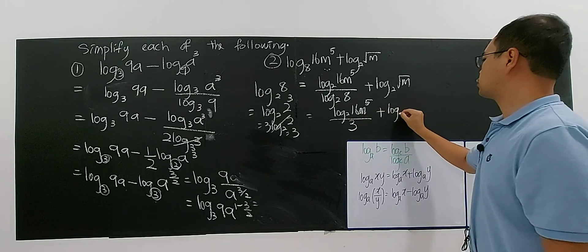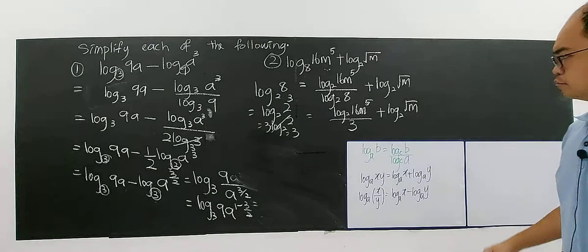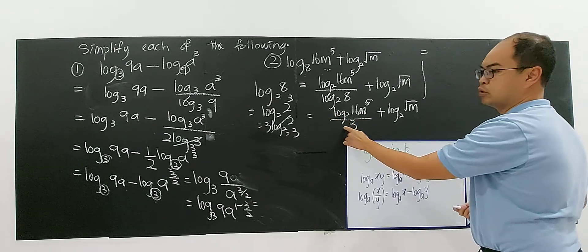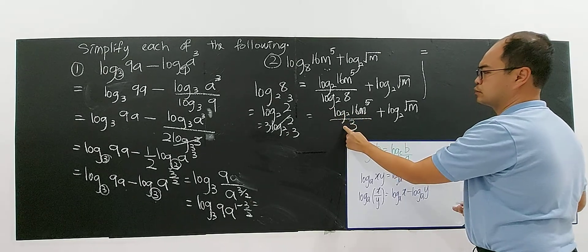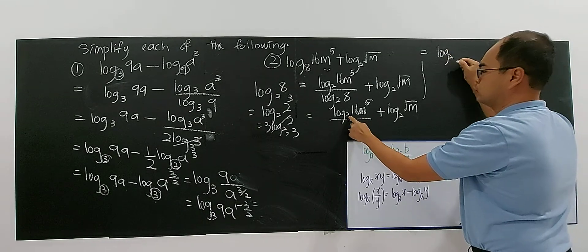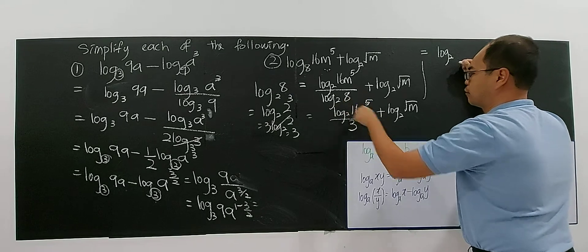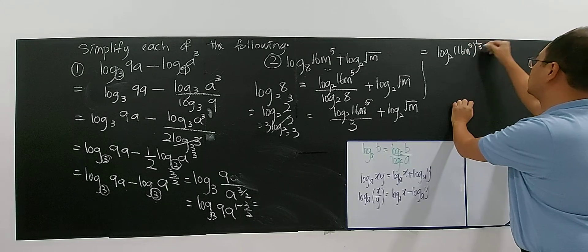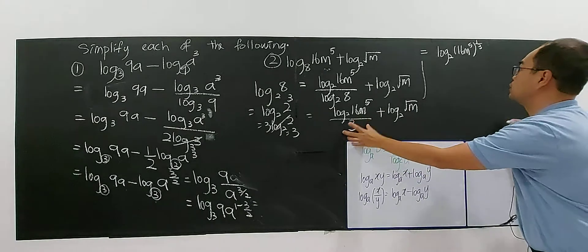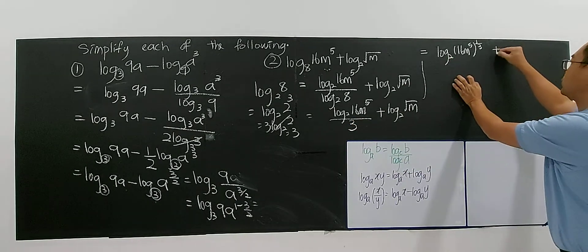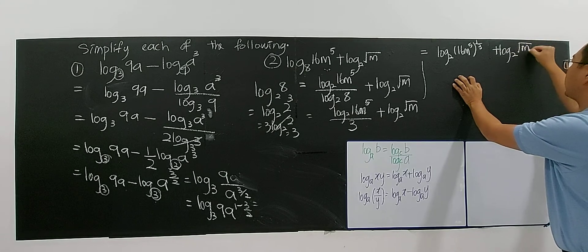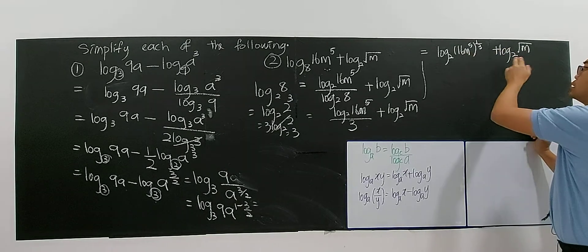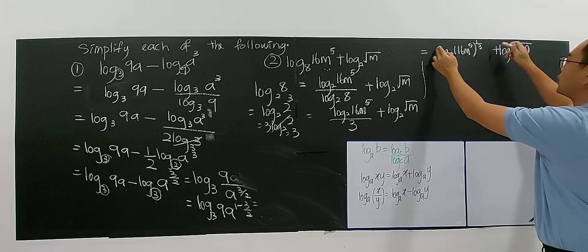Plus log base 2 of √M. And it's not over yet — you have to further simplify. Since it's 1 over 3 in front, the 1 over 3 can be brought in as a power: log base 2 of (16M⁵)^(1/3), plus log base 2 of √M. Now it's already okay because the bases are the same, and the coefficients are both 1.